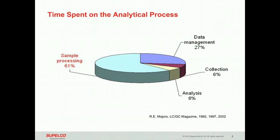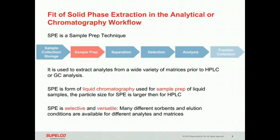If you look at the time spent on analytical processes, sample processing still takes the biggest chunk of the time from any lab work. It can present a significant bottleneck — it can account for over 61 percent of time spent on analysis and can contribute to 30 percent of the experimental errors. So choosing the correct sample prep protocol can go a long way to making an analysis more reliable and increasing laboratory throughput.